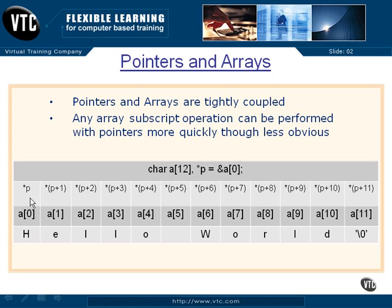Contents of P is the same as A sub 0, which is an 'H'. Contents of P plus 1 is the same as A plus 1. And really, in the compiler, when you use A plus 1, it is changed into contents of a pointer plus 1. These brackets go away before the compiler gets a hold of the code.